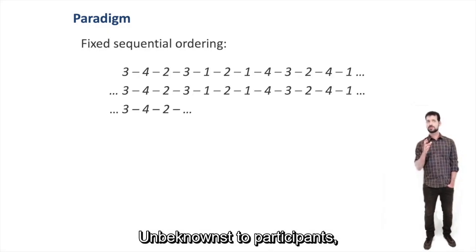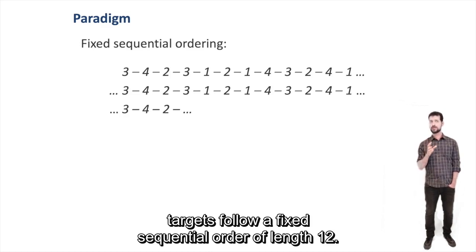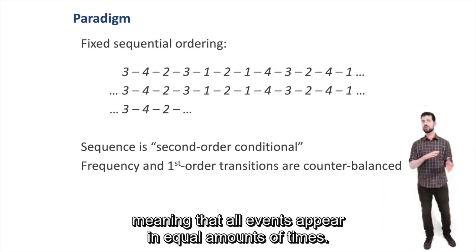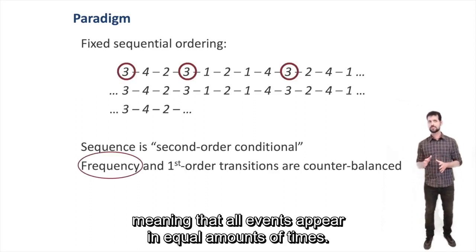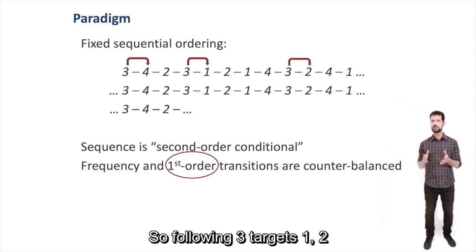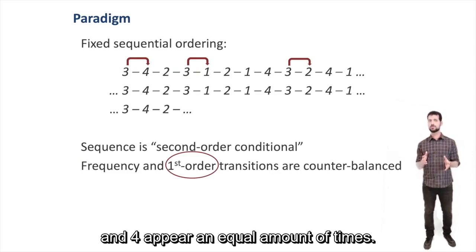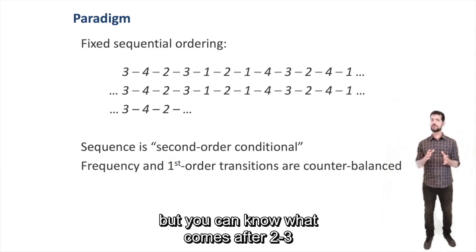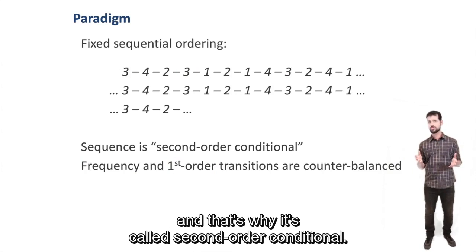Unbeknownst to participants, targets follow a fixed sequential order of length 12. The order is special in that it's second order conditional, meaning that all elements appear in equal amounts of times, and first order transitions are also counterbalanced. So following three, targets one, two, and four appear in equal amounts of times. So you can't know what comes after three, but you can know what comes after two-three, and that's why it's called second order conditional.